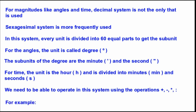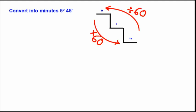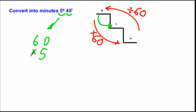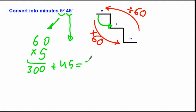Let's see an example of how to perform operations. First, let's convert 5 degrees and 45 minutes into minutes. To convert degrees into minutes, we have to multiply by 60. So 60 multiplied by 5 gives 300.